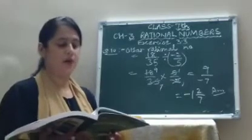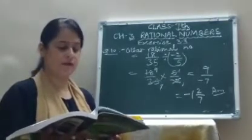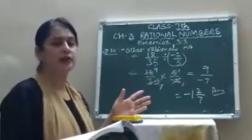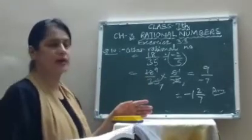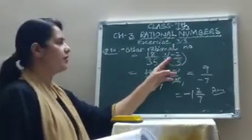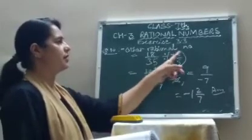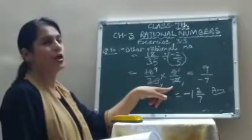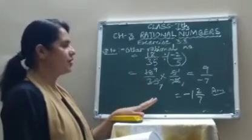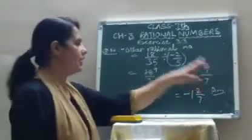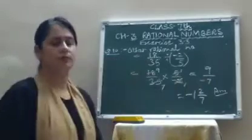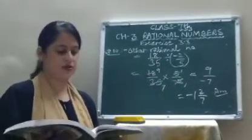Question number 10: the product of two rational numbers is 18 upon 35; one of them is minus 2 upon 5 — find the other. To find the other rational number, divide: 18 upon 35 divided by minus 2 upon 5. Change divide to multiply and take the reciprocal of minus 2 upon 5, which is 5 upon minus 2. Cancel: 2 nines are 18, 5 over 5. After cancelling, 9 multiplied by 1 and minus minus 7 — the answer is minus 9 upon 7, which is minus 1 whole number 2 upon 7.